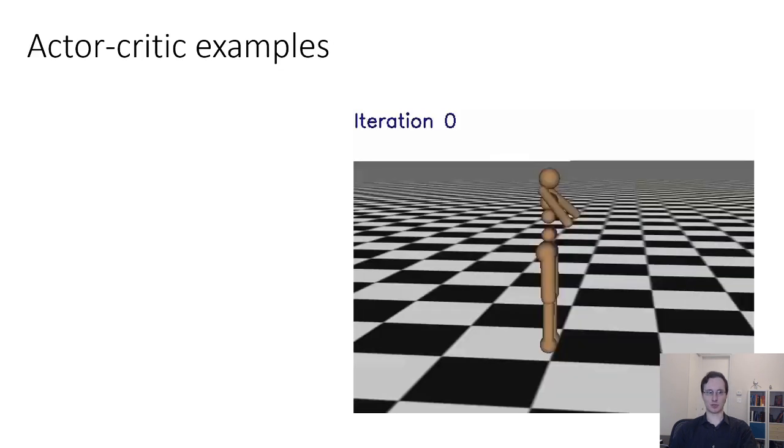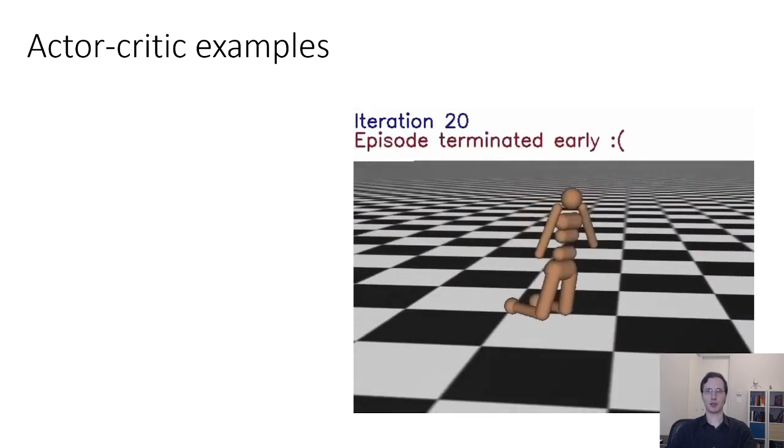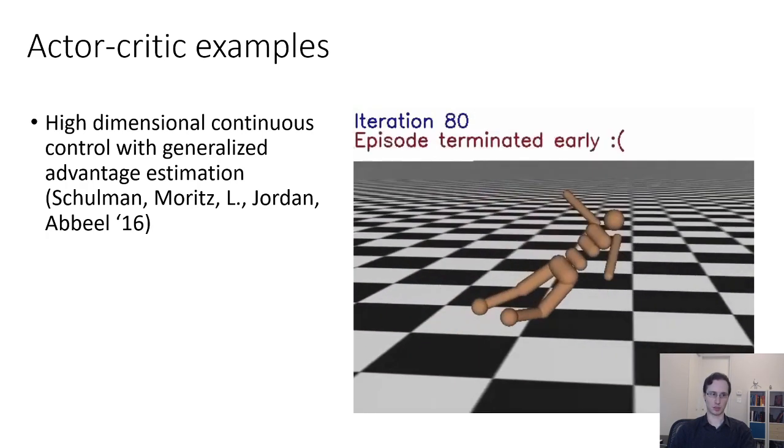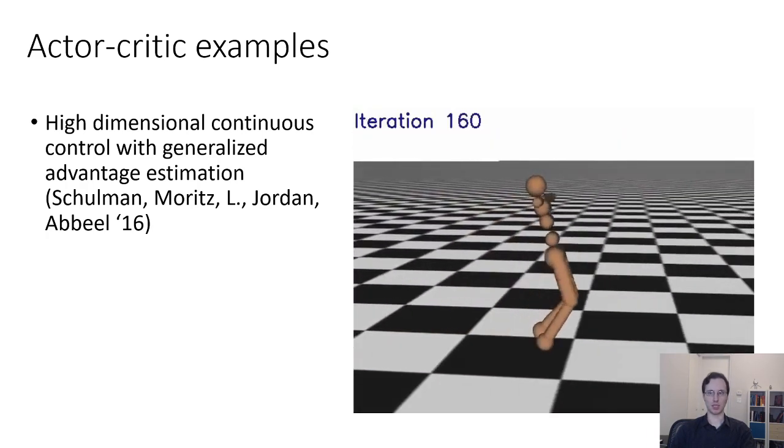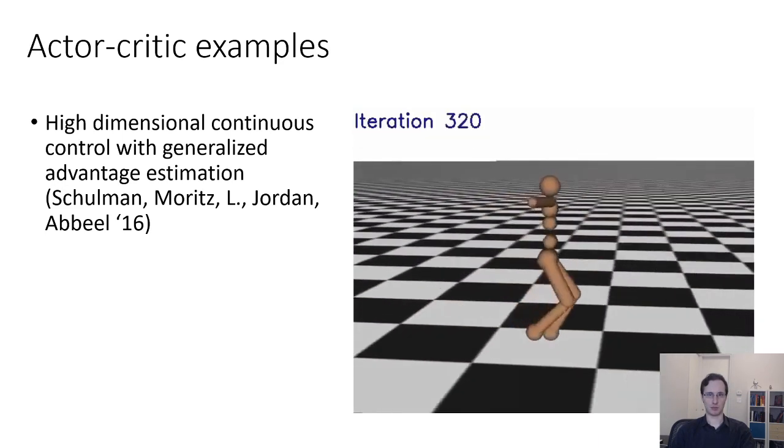Here are some examples of actor-critic algorithms in the literature. This video, which I've showed several times already, is actually from a paper called High Dimensional Continuous Control with Generalized Advantage Estimators, which introduced the GAE estimator, which is basically a kind of weighted sum of different n-step estimators.